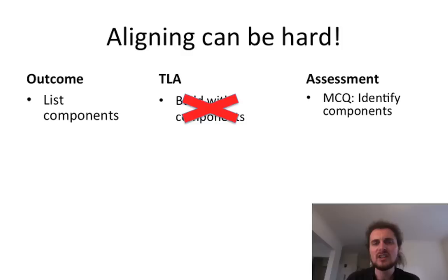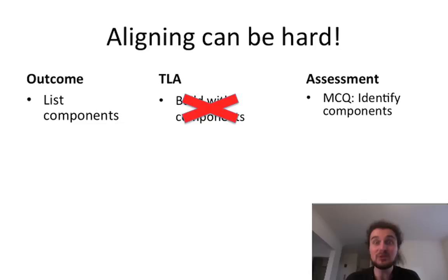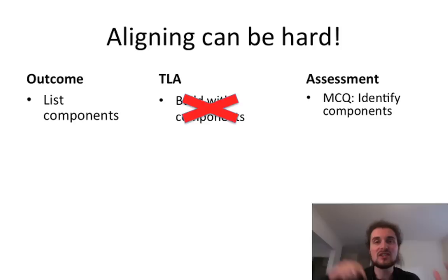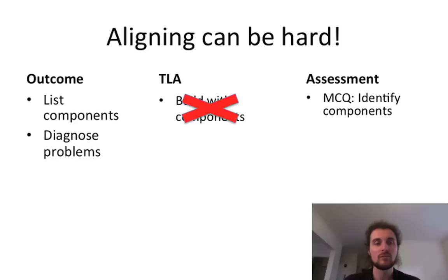How could we fix that? If what really matters to you is that students can build electric circuits with the components, change the outcome and the assessment so they focus on the ability to build with components and you assess them on building something. If, however, what really matters is being able to list and identify things, change the teaching and learning activity — show them some circuits and say 'this bit is the resistor and this is the capacitor,' and practice being able to identify those bits, because that might be really important. Maybe there's a certain bit that will kill you if you touch it — it's really important you can identify it.